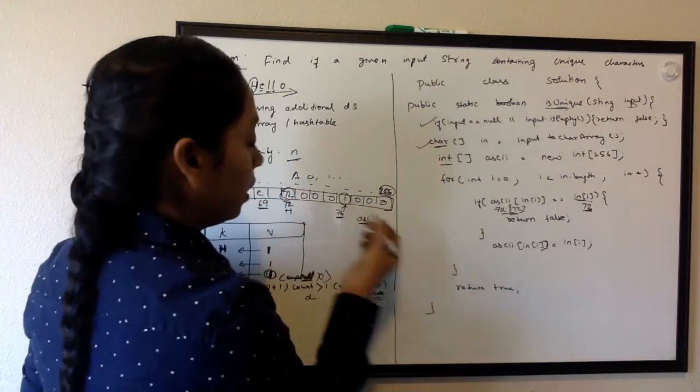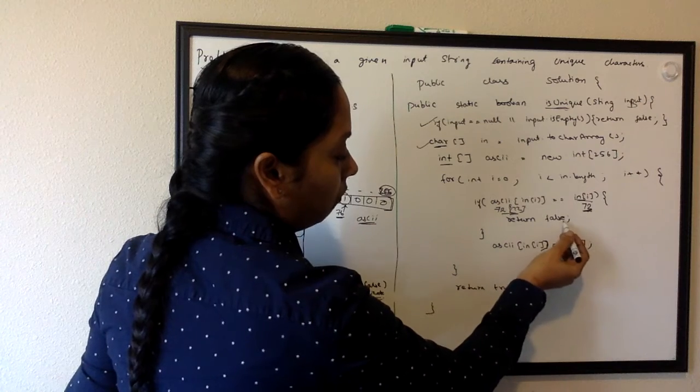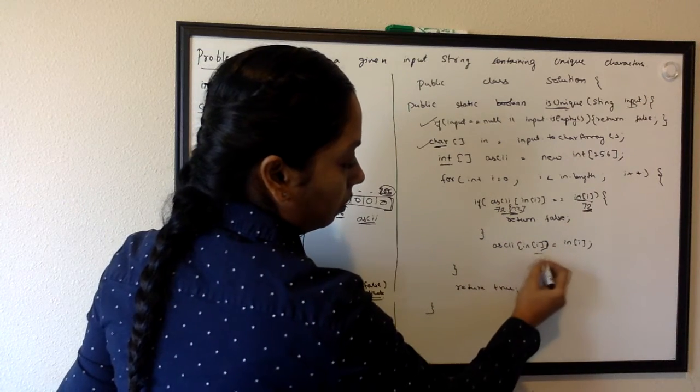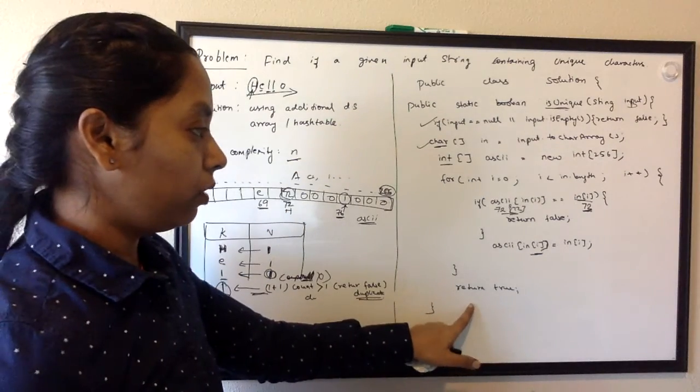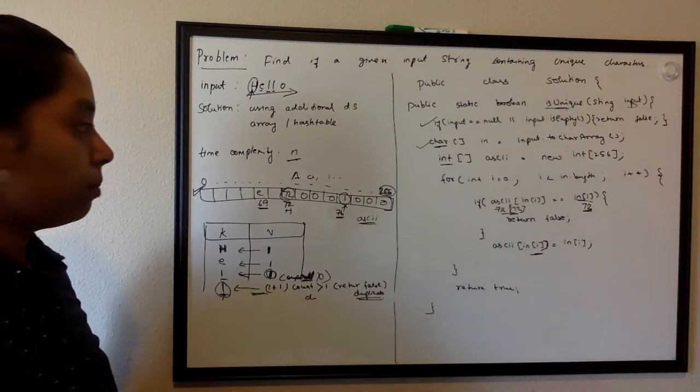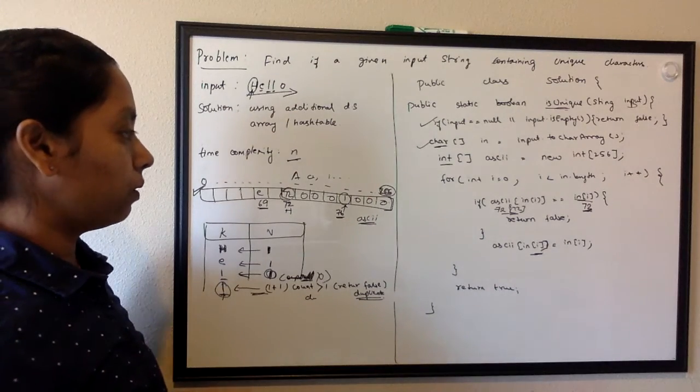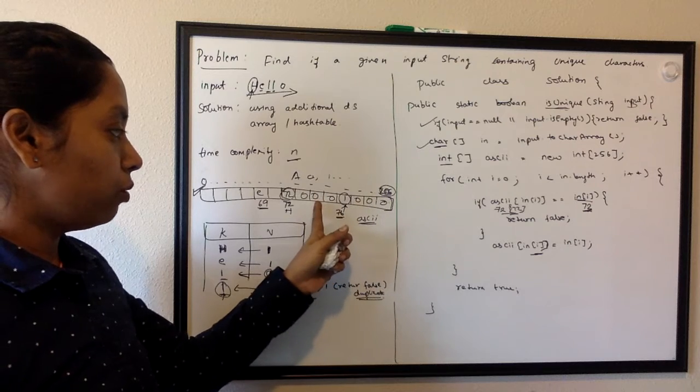What we are saying is if both are same - if the array is already containing the 72 value - then just return false, else add it to that position. So at the end we're going to return true, else return false here. This is very simple coding.